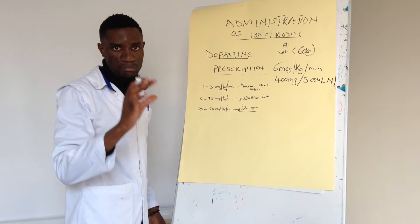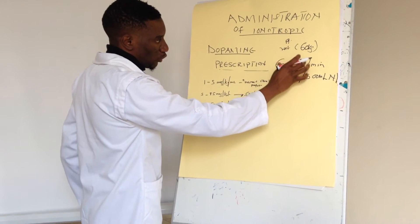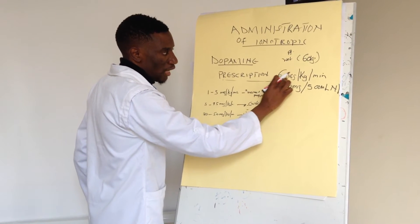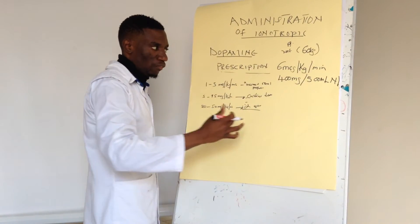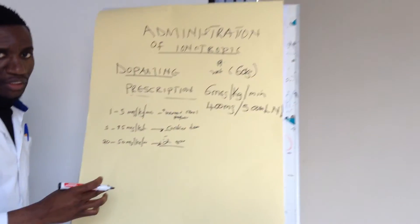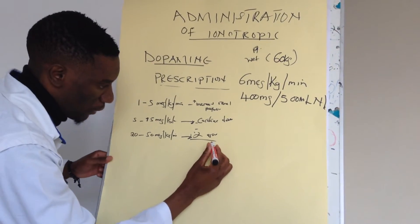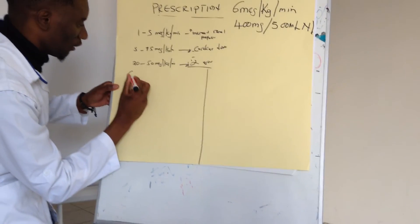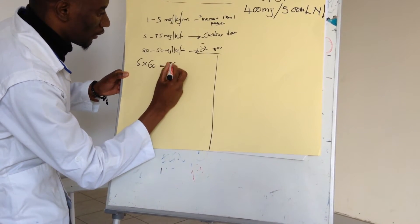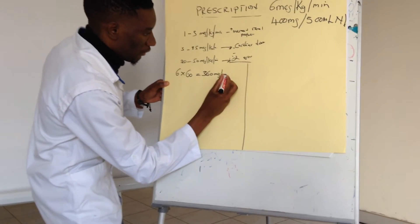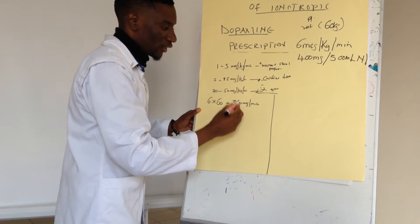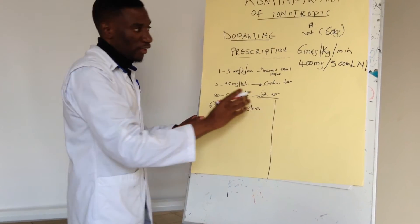The first thing you need to do is calculate the patient's minute dose. The prescription is 6 micrograms per kg per minute, so you multiply 6 by the patient's weight. Using a patient weight of 60 kg: 6 times 60 gives us 360 micrograms per minute. The kg units cancel, leaving us with 360 micrograms per minute as the patient's minute dose.